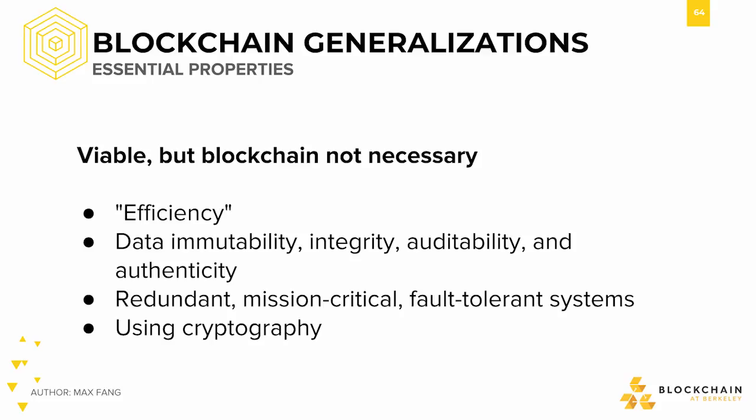Additionally, characteristics of data storage such as data immutability, integrity, auditability, and authenticity can be achieved at much lower costs without a blockchain. Redundant, mission-critical, fault-tolerant systems have been around for decades, and cryptography has been around for millennia. All of these properties have been solved individually. Blockchain simply ties them all together. Each of these can be achieved by using a subset of the technology that goes into making a blockchain. While blockchains will solve any of these individual requirements, they are over-engineered solutions to these problems.